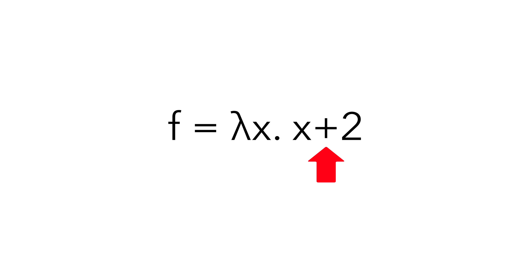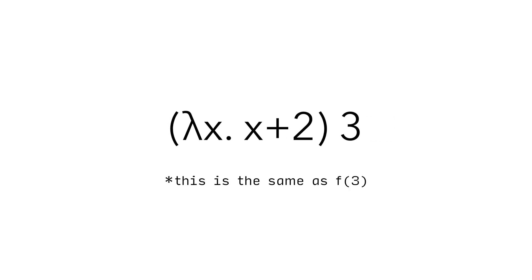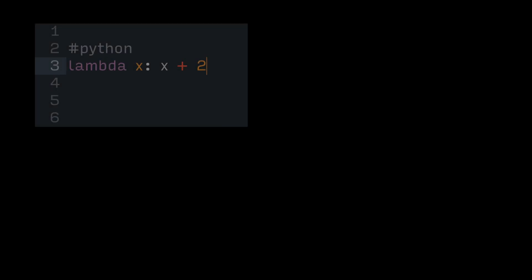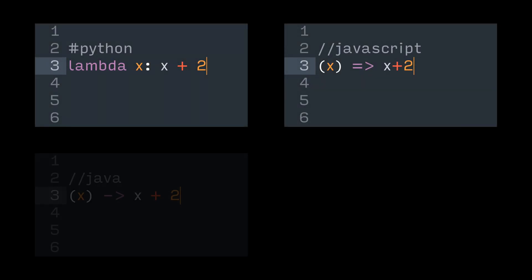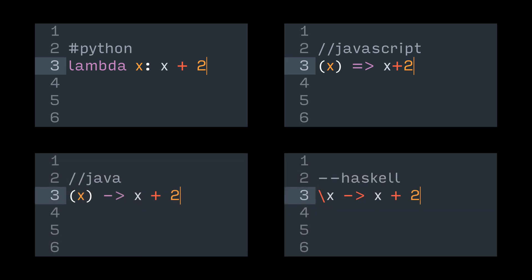This creates the function on the spot, so you can either immediately call it by passing in an input, which you do by writing the input on the right, separated by a space. Or you can do whatever else you want to do with it, just like a value. Here are how lambdas are written in other languages, and you will see that they are the exact same, besides a few characters swapped out. Some of you might recognize them by the name anonymous functions or closures.